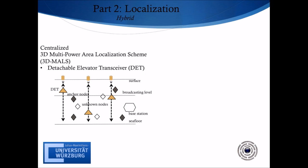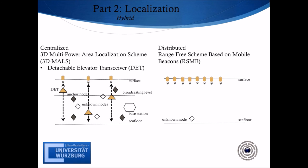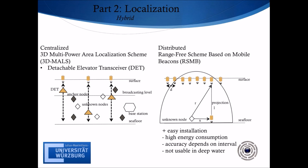The last technique shown in this video is the Hybrid Distributed Localization Range-Free Scheme based on mobile beacons. Instead of many deployed beacons, only one mobile beacon acting as an anchor node broadcasts its position periodically while moving along the surface. The interval distance is marked as D. An unknown node can receive five beacon signals; after three connections are chosen, the mobile beacon position can be projected on the same level as the unknown node. Knowing R from time of arrival and L from a depth sensor, X can be calculated. After determining X for each of the three beacons, the unknown node can localize itself. Despite the fact that this technique is easy to install, it is very rarely used because of the high energy consumption of the mobile beacon. The localization time and accuracy depend highly on sending interval, and it cannot localize unknown nodes in deep water.